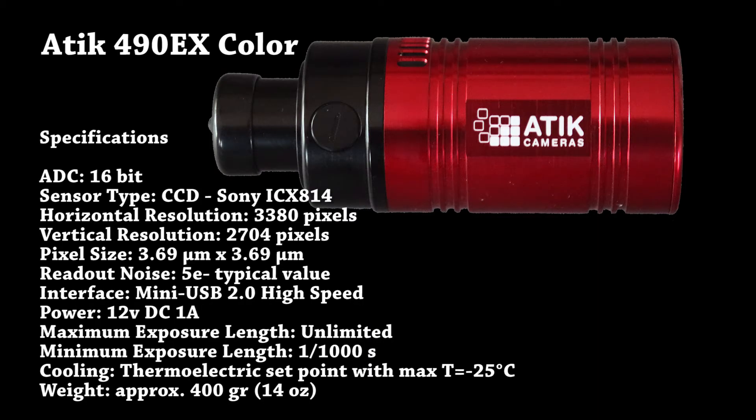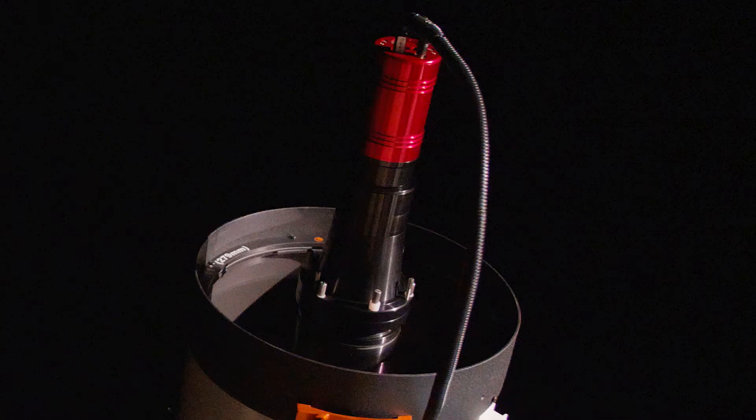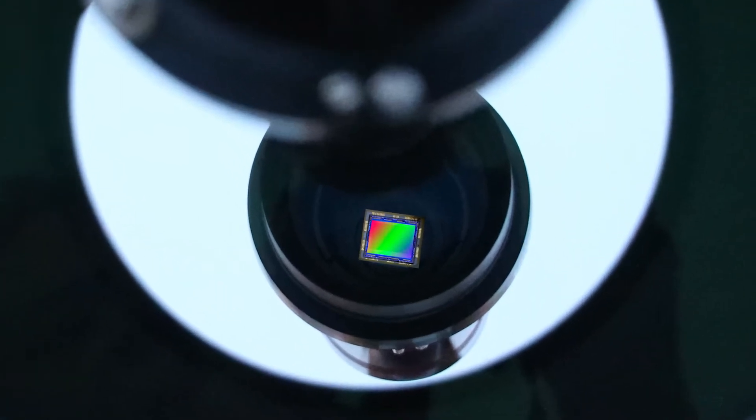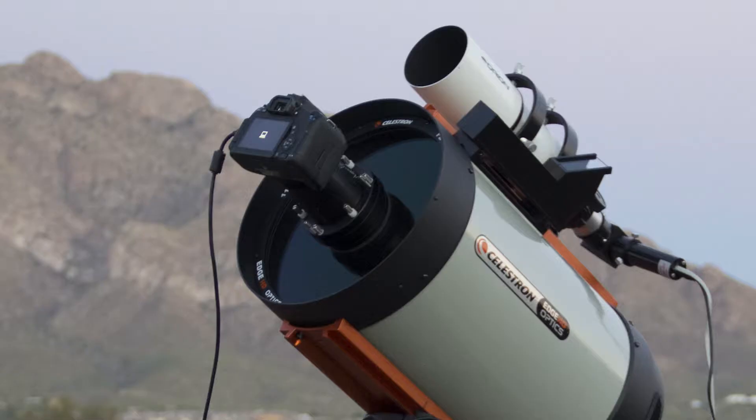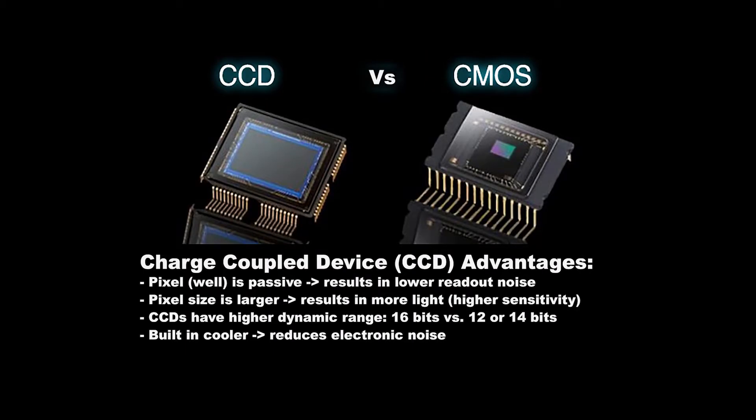A CCD camera is attached to the Hyperstar lens to record the images. Note that a CCD sensor is used instead of a CMOS sensor typically found in DSLRs because CCD sensors have larger pixels which makes them much more sensitive to light while having very low electronic noise and greater dynamic range.